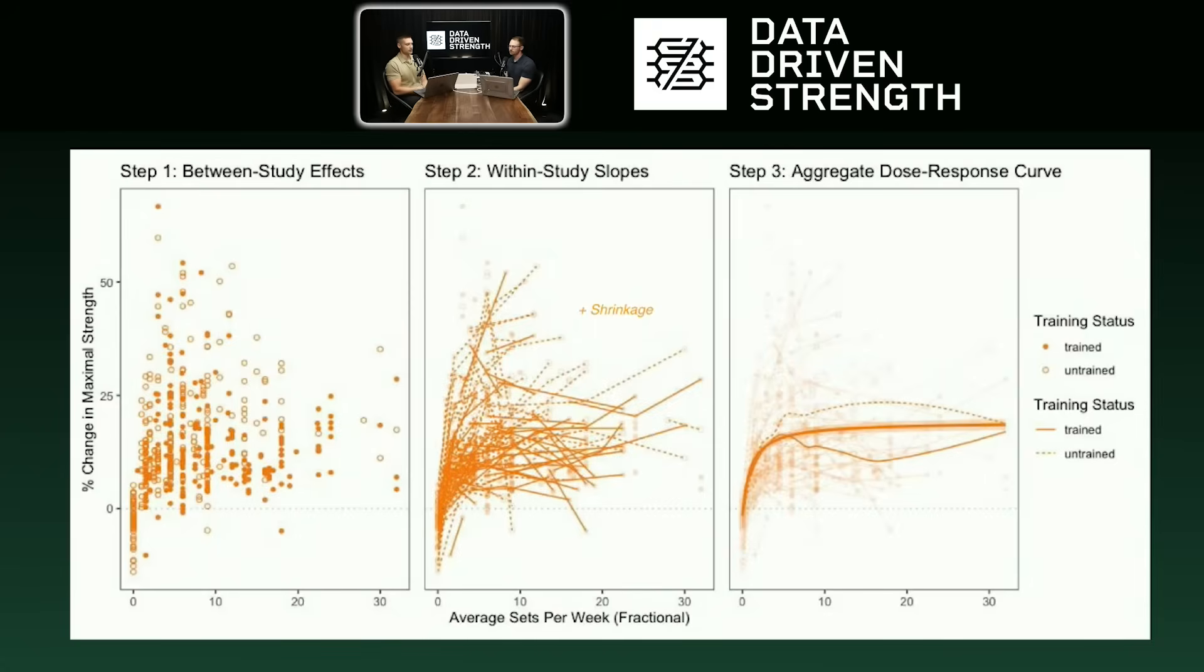So we'll talk about that a bit. And I think when you see the strong diminishing returns in the main meta-regression line, that could be a thought. It's like, maybe that doesn't apply to me because I'm an advanced lifter. And maybe you're right, maybe not. We'll discuss that some more.